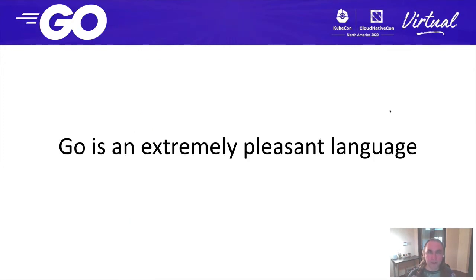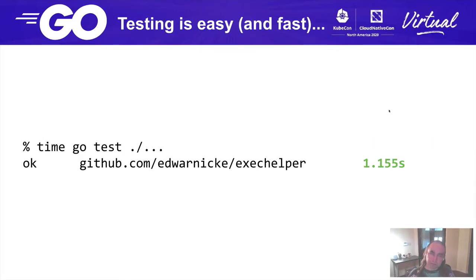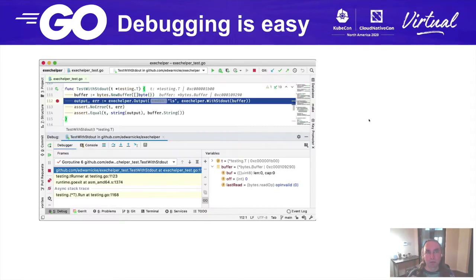Go is an extremely pleasant language. Its builds are fast. It makes testing very easy and also fast. And it makes debugging very easy, and there is a whole ecosystem of tools to plug into the debugging of Go.